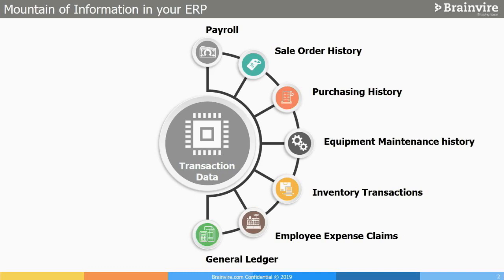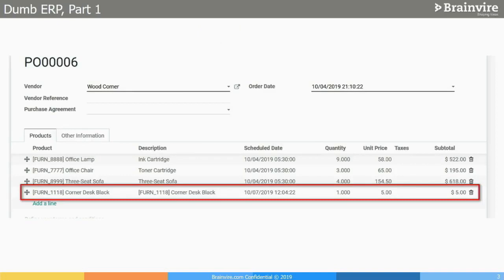We're going to talk about different modules and activities across your industries. Let's start with employee expenses — how we can track and utilize those things to provide more value. First of all: are we using a smart ERP or a dumb ERP? How many of you feel you're using a smart ERP?